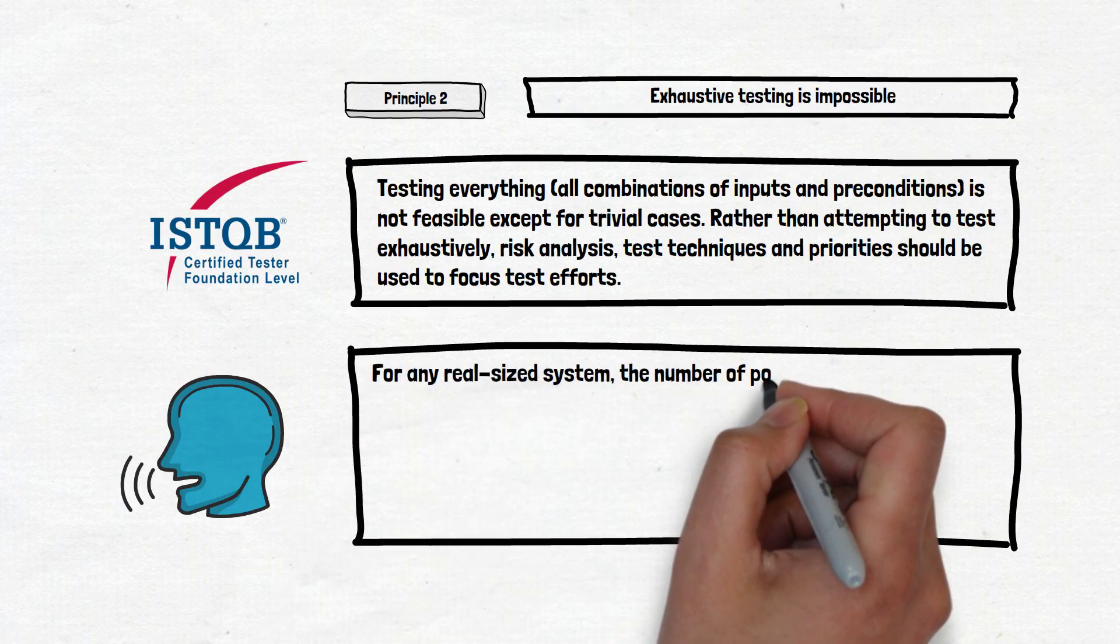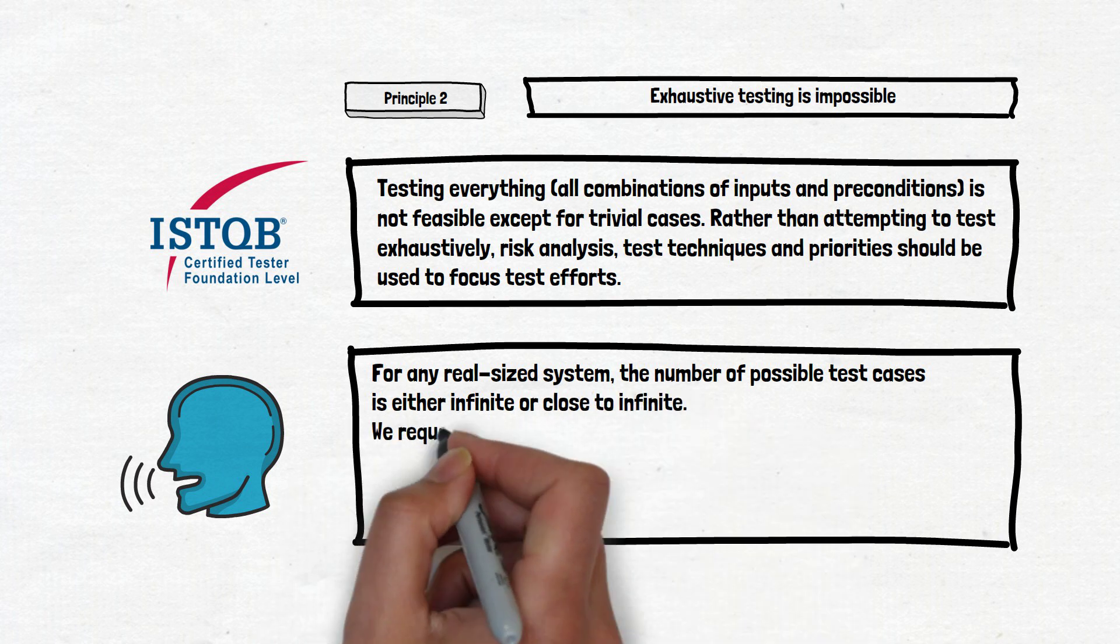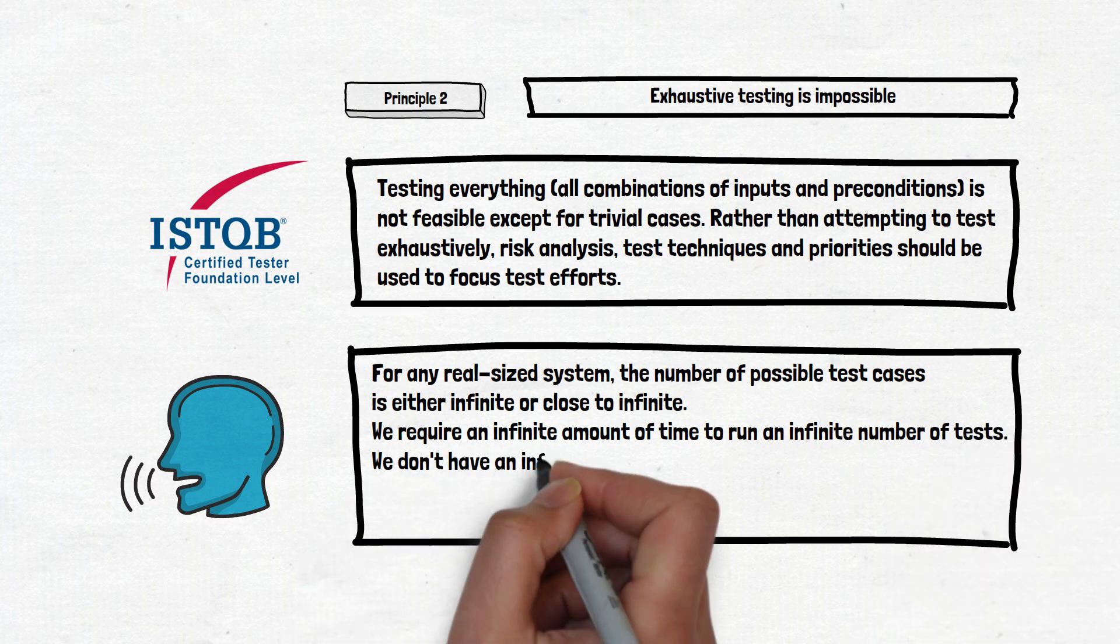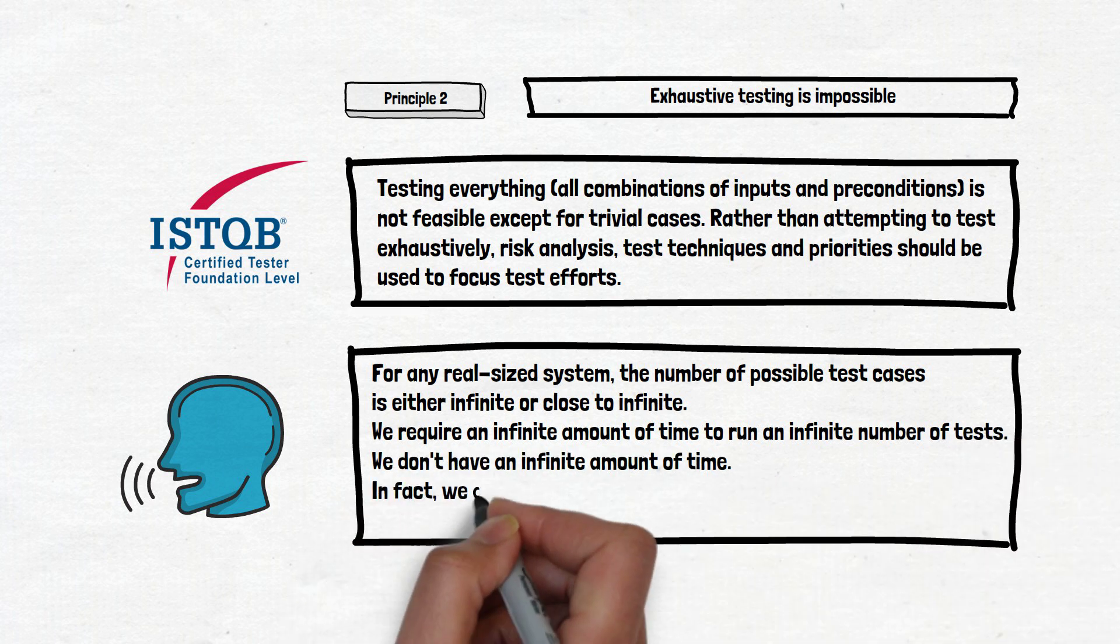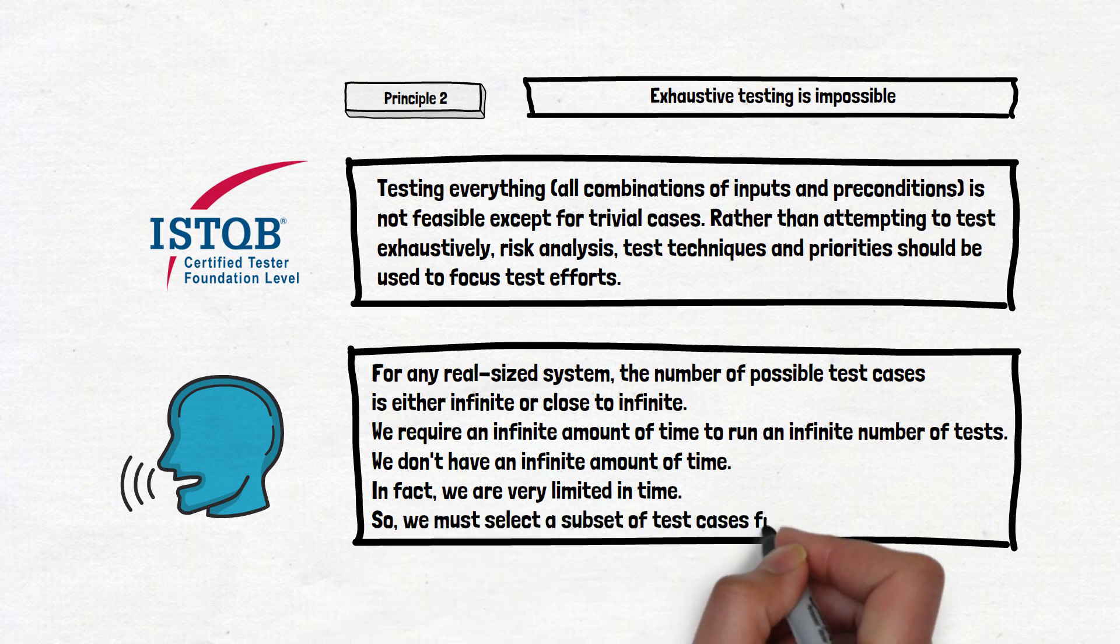First of all, you should recall the testing principle. Exhaustive testing is impossible for any real-sized system. The number of possible test cases is either infinite or close to infinite. We require an infinite amount of time to run an infinite number of tests. We don't have an infinite amount of time. In fact, we are very limited in time. So we must select a subset of test cases from it. And the test techniques are here to help us to select the subset of tests.